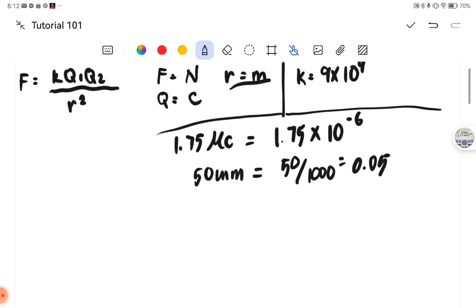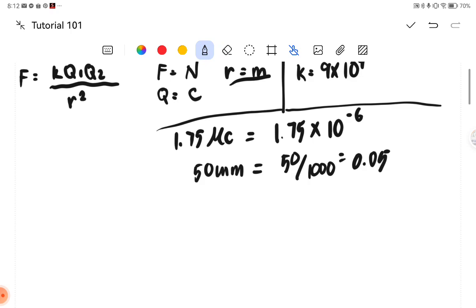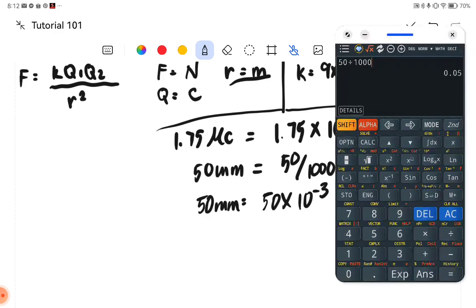Or also, we can just simply, 50mm is equivalent to 50 times 10 raised to negative 3, or simply 0.05. We can do this, see, let's try, 50 times 10 raised to negative 3. We will obtain the same value.